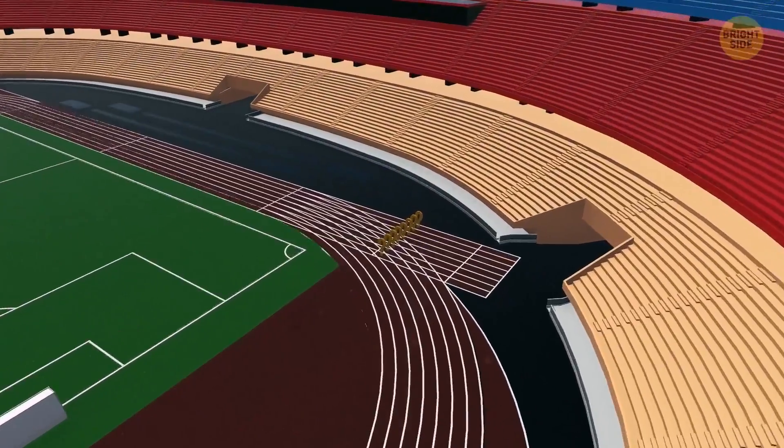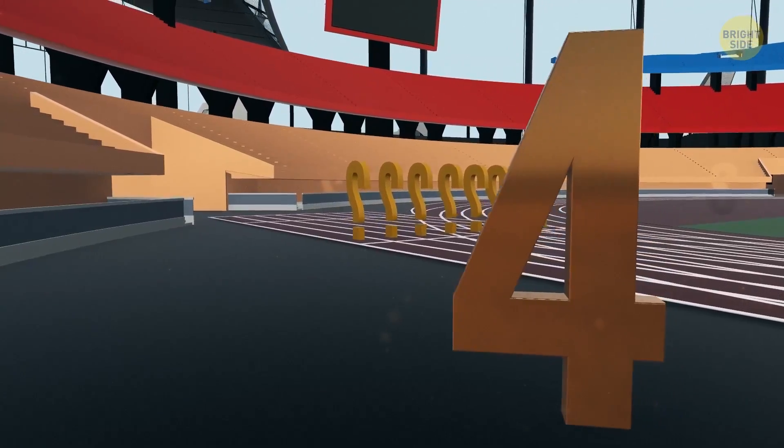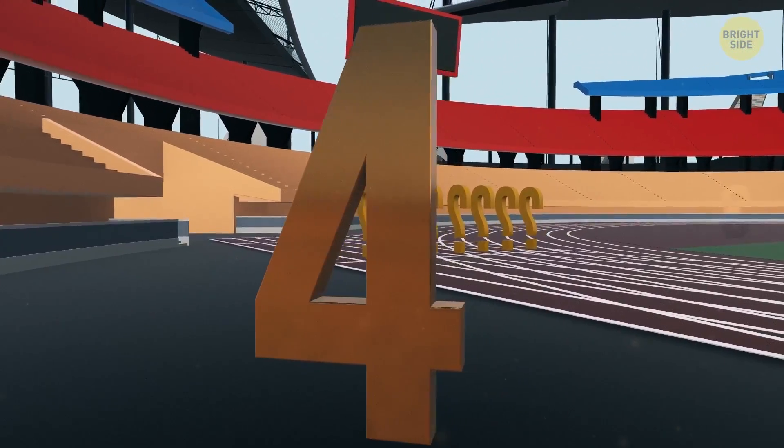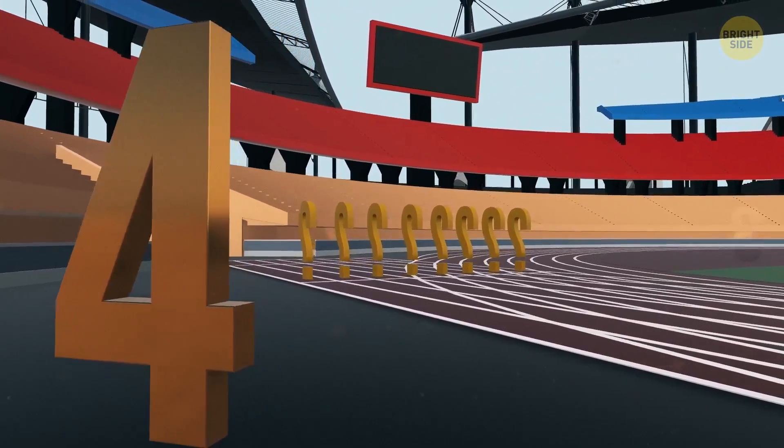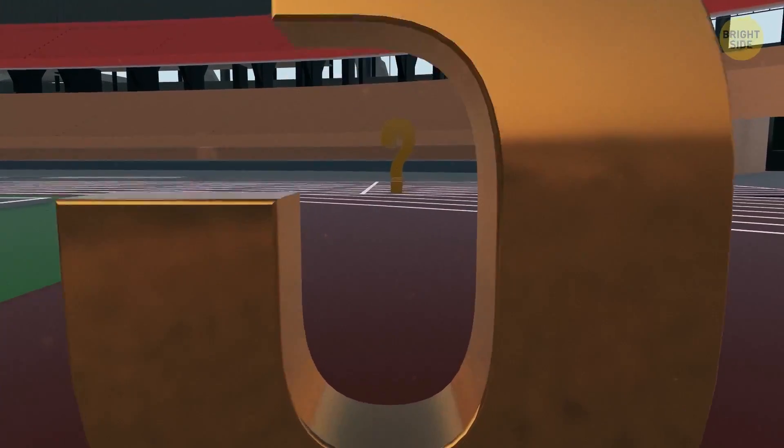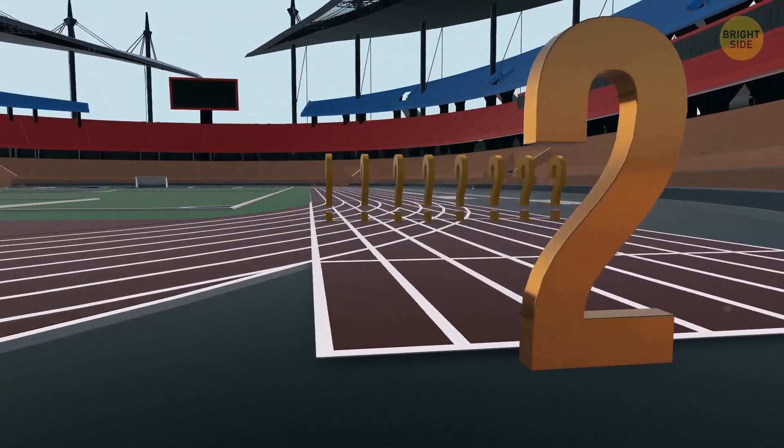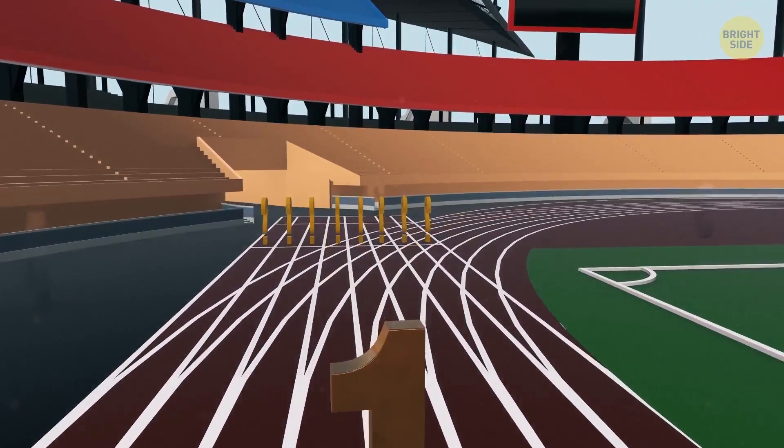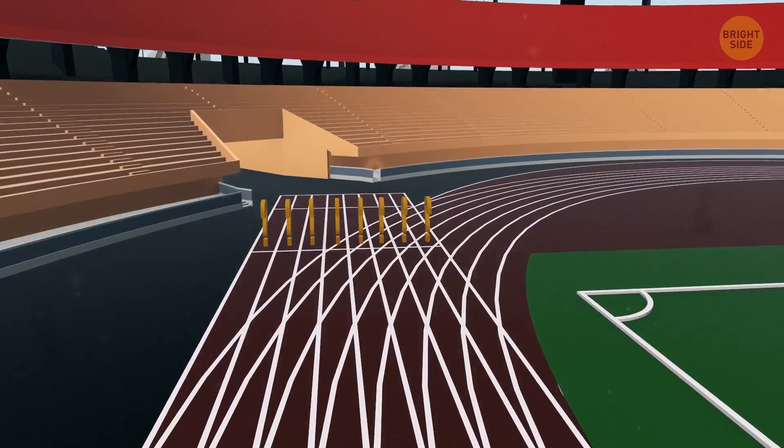Five. Runners take their positions. Four. On the tracks are 10 fastest objects created by humans. Three. Fans are worried. Complete silence at the stadium. Two. Who will be the winner? One. The fastest human-made object ever built. Go!